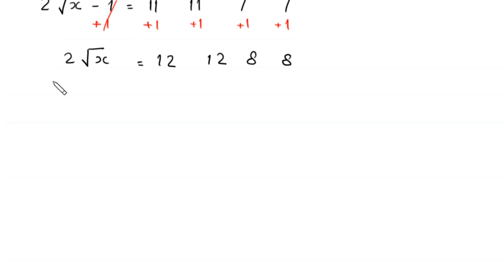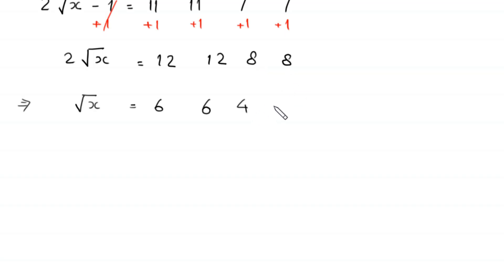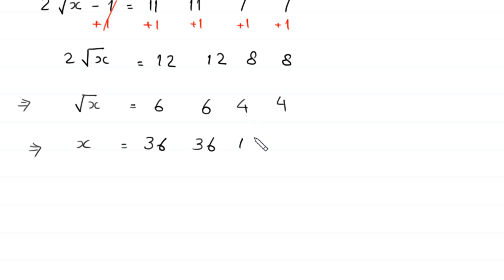Dividing both sides by 2, root x equals 12 divided by 2 which is 6, or 8 divided by 2 which is 4. Squaring both sides, x equals 6 squared which is 36, or x equals 4 squared which is 16. So we get two values of x: x equals 36 and x equals 16.